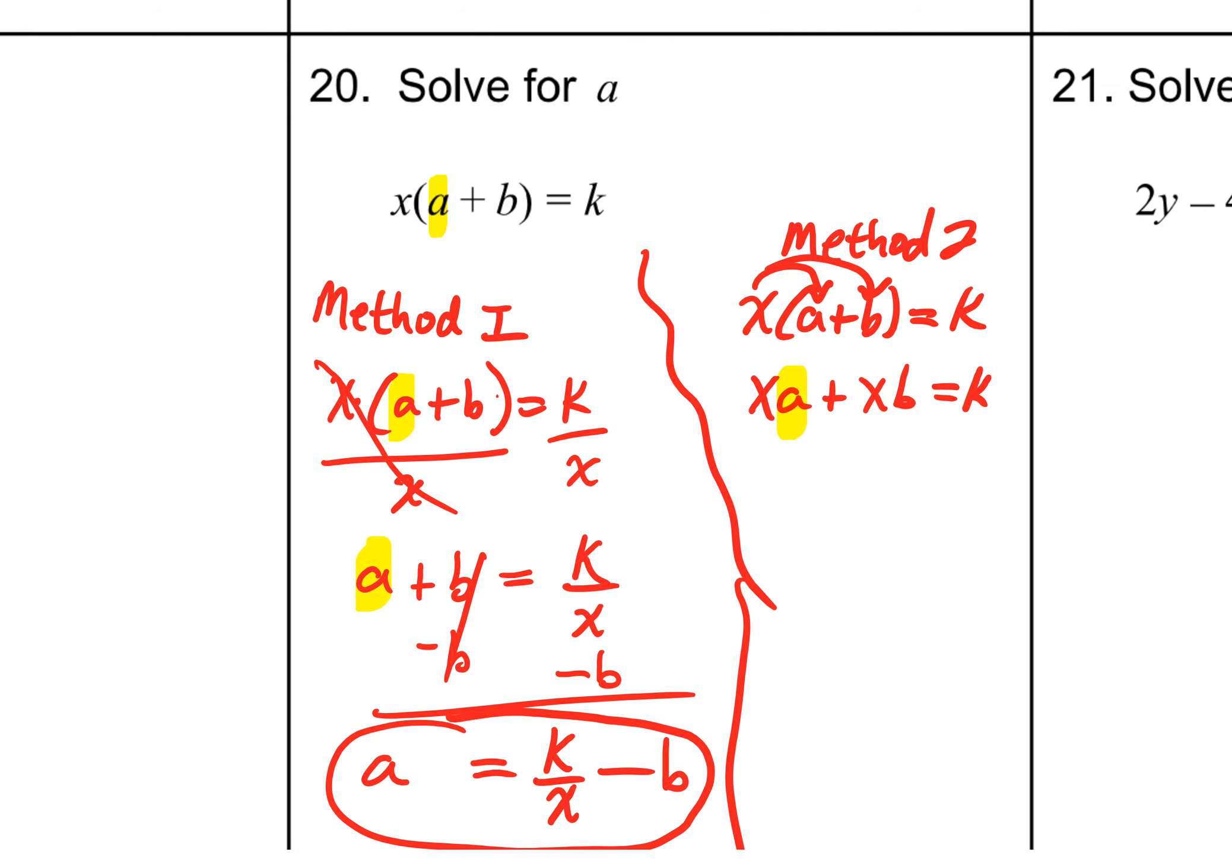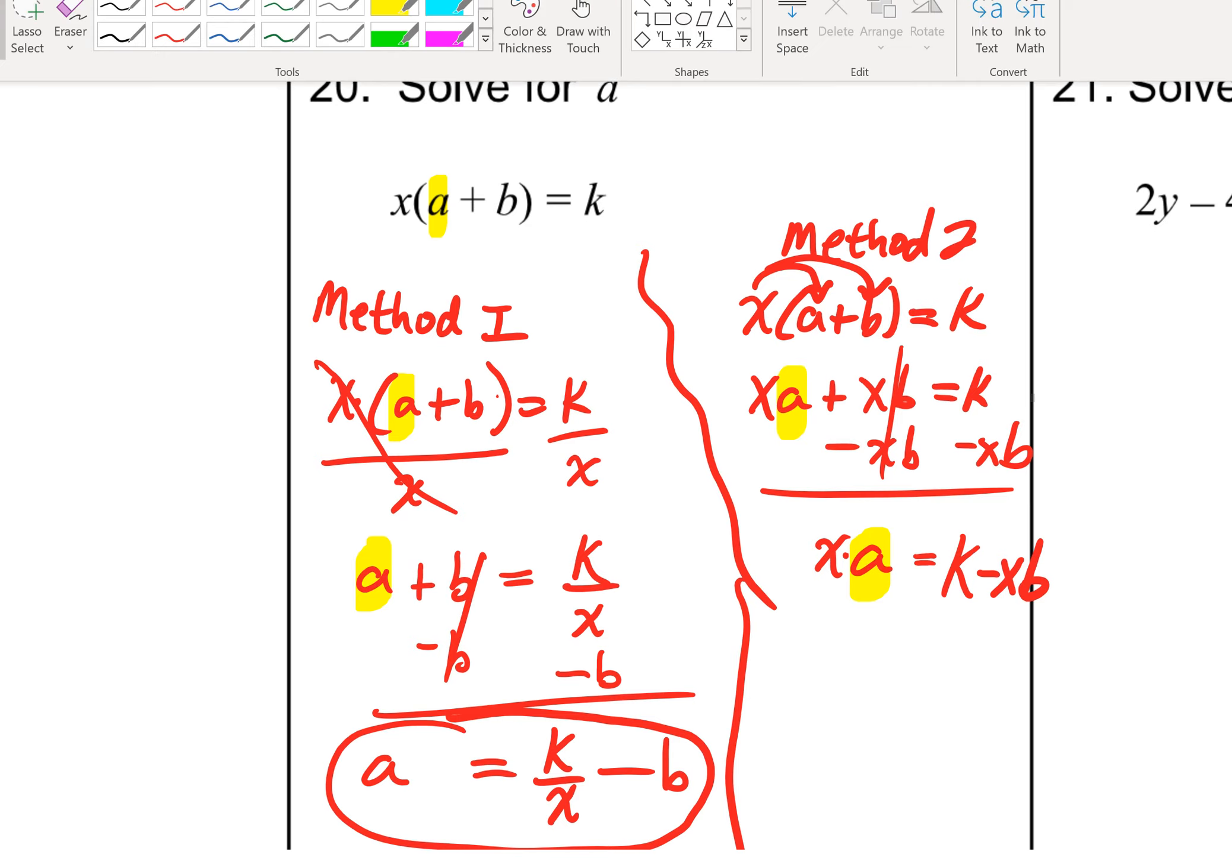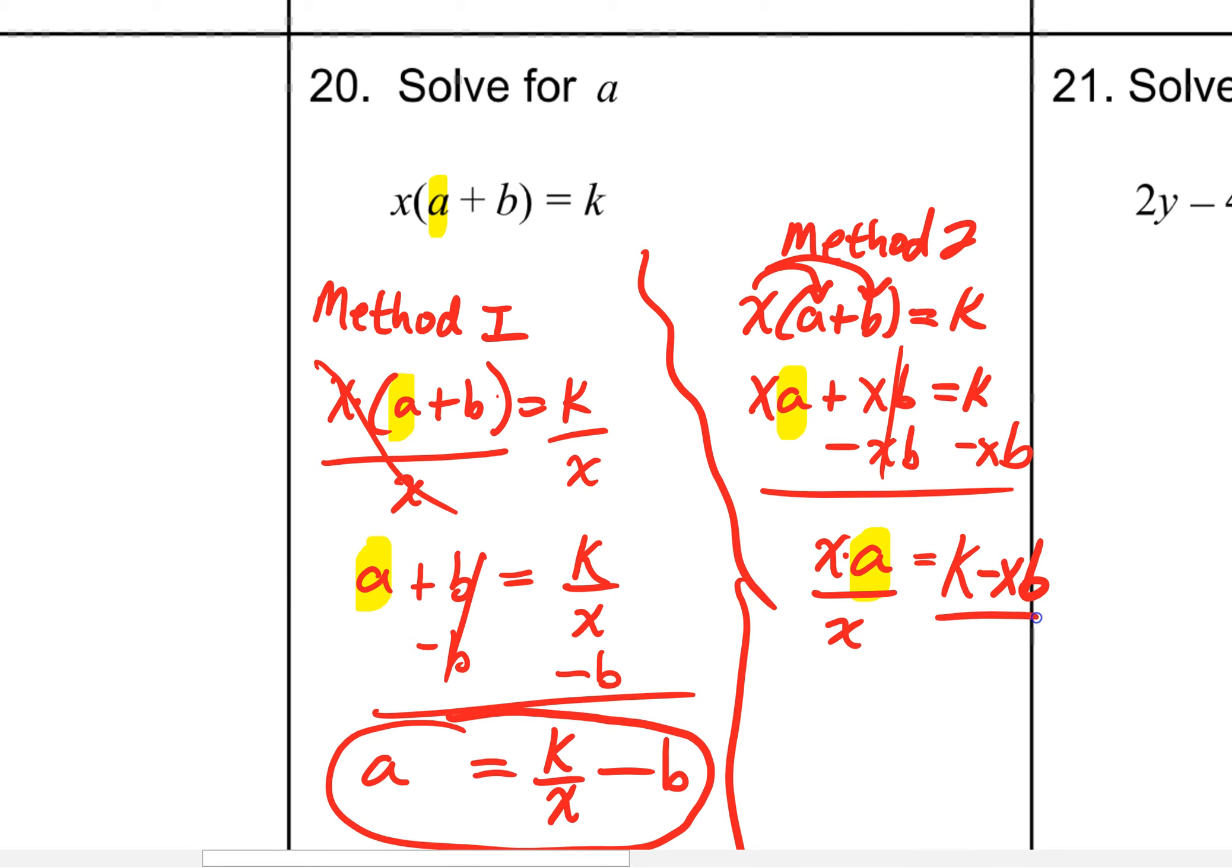Well, now what? Well, our a is being multiplied by x, but we also have this addition of xb. So, I'm going to subtract an xb. On the left, I'll have x times a. Over here, I'll have k minus xb. And we're just one little baby step away. I think you can see where we're going. a is not by itself. It's being multiplied by x. So, you want to get rid of that x. x is multiplied. The inverse operation is division. So, your final answer, then, is k minus xb all over an x.